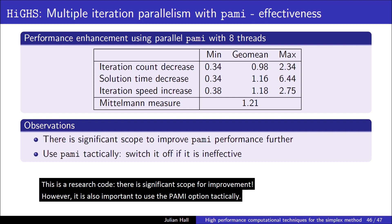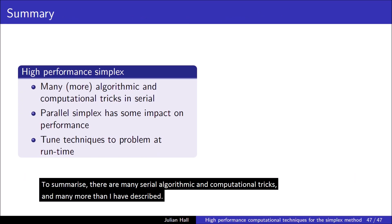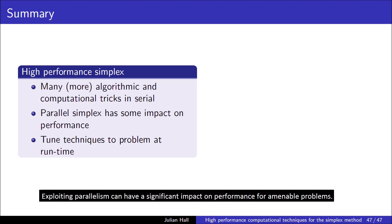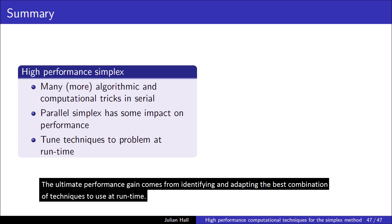This is a research code. There is significant scope for improvement. However, it is also important to use the PAMI option tactically. Qi took his knowledge of parallel simplex to FICO, where the express simplex solver became the best in the world, and remained so for most of the time he was there. To summarise, there are many serial algorithmic and computational tricks, and many more than I have described. Exploiting parallelism can have a significant impact on performance for amenable problems. It is not the holy grail for overall benchmark results, but it may be valuable for a particular customer's class of problem. The ultimate performance gain comes from identifying and adapting the best combination of techniques to use at runtime. Here are references to the associated publications.